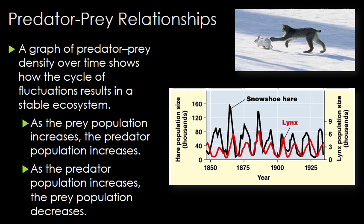Predation is an interaction between species in which one species hunts, kills, and eats the other. That interaction helps regulate the populations within an ecosystem, thereby causing it to become stable. Fluctuations in predator-prey populations are very predictable. At some point the prey population grows so numerous they're easy to find. If you look at that graph, you can see the boom and bust between the different species, with a little bit of a delay between the peaks called the lag time. As the prey population increases, the predator population increases. As the predator population increases, the prey decreases. So it's a constant cycle of fluctuation between predator and prey.